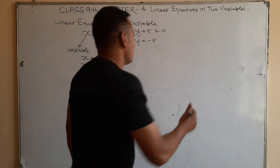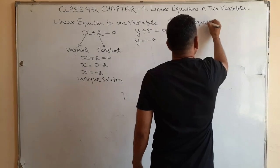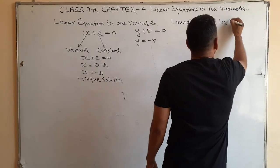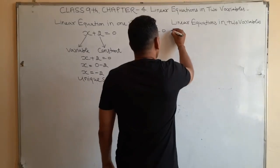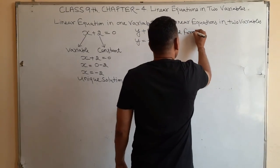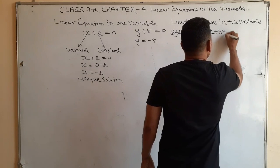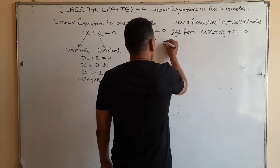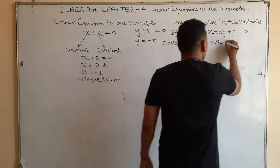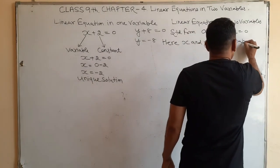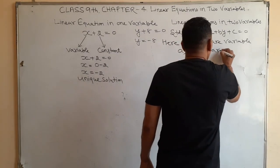Now we take linear equations in two variables. The standard form of a linear equation in two variables is ax plus by plus c is equal to 0. Here x and y are variables, and a, b, and c are constant terms.